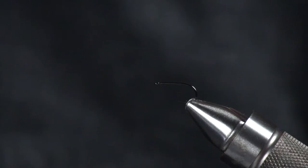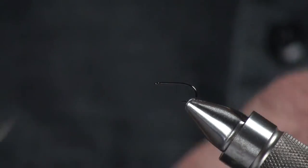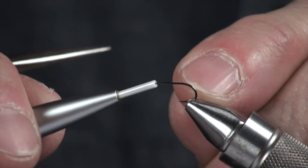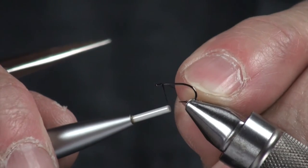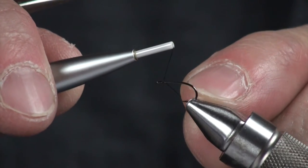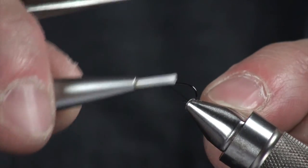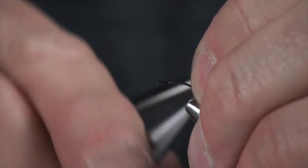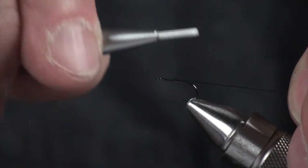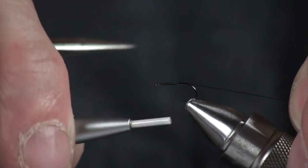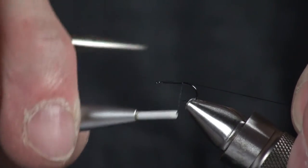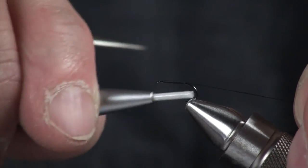First thing we're going to do here is I'm going to tie in my thread maybe about one width behind the eye and I'm going to leave a long tag. As I come backwards I'm just going to tie this tag right on top of the hook.